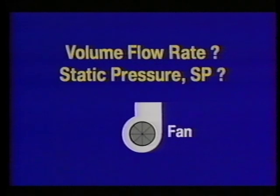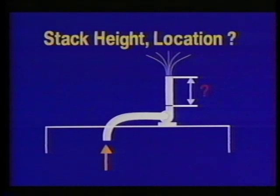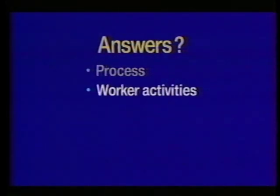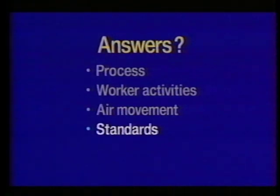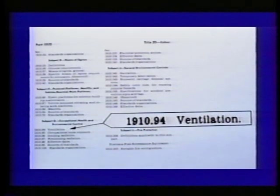How large should the fan be? Fans are chosen to match the requirements of the exhaust ventilation system — the fan must move the correct volume of air against the resistance caused by friction and turbulence. The designer will estimate the static pressure required. How high should the stack be and where should it be located? The stack must be high enough or far enough from intakes to avoid re-entrainment of contaminants into the building air handling system. These questions are answered through careful study of the industrial process, worker activities, air movement in the workplace, and by searching design references for appropriate standards. OSHA has included some design criteria in its ventilation regulations.